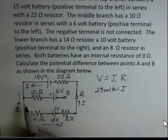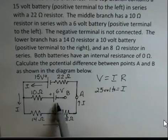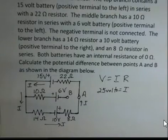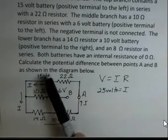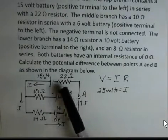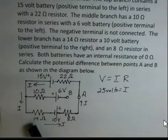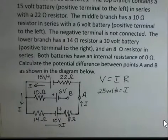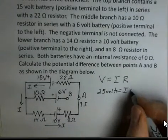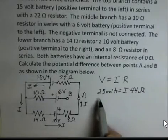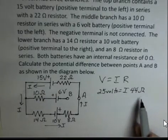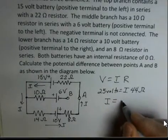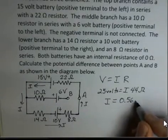What's the total resistance? We don't worry about the middle stub — there's no current moving in there, so we don't include the 10 ohms. The total resistance around the outer loop is 22 plus 14 plus 8, which is 22 plus 22, giving 44 ohms. So we take 25 volts divided by 44 ohms, and the current around the outside of the circuit is 0.568 amps.